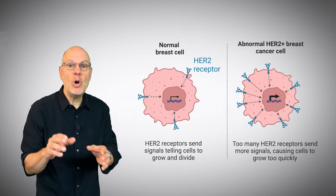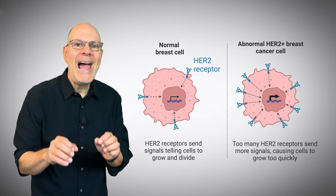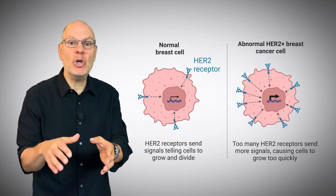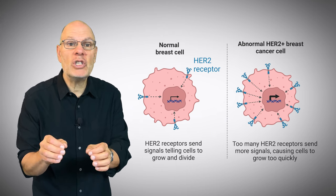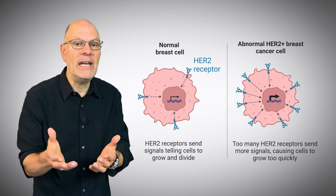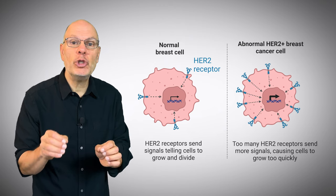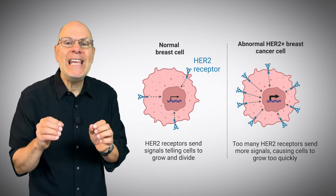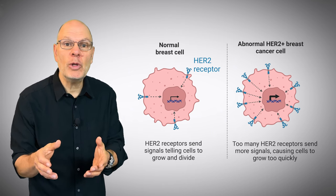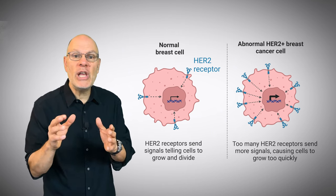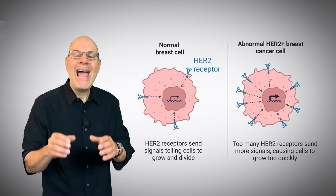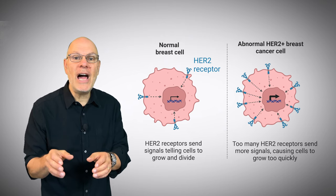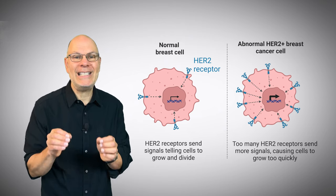A normal breast cell with a proto-oncogenic form of HER2 has the right amount of these receptors. When these receptors bind with an epidermal growth factor, a signal transduction pathway is initiated that tells the cell to divide. But the oncogenic form of the HER2 gene codes for too many HER2 receptors. As a result, even when the concentration of epidermal growth factor is very low, the cell picks up the signal and enters into the cell cycle, and cells with this mutated oncogene divide when they shouldn't, potentially leading to cancer.